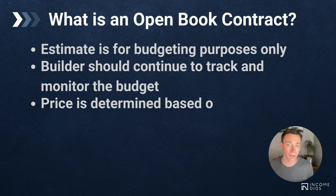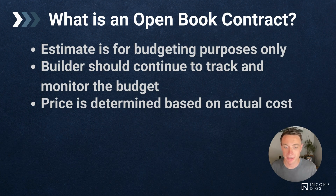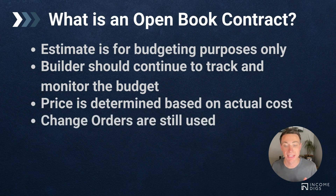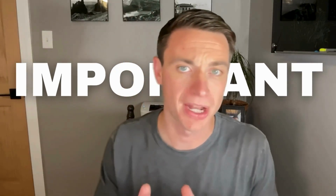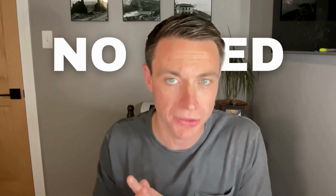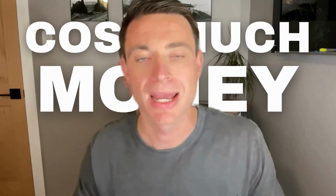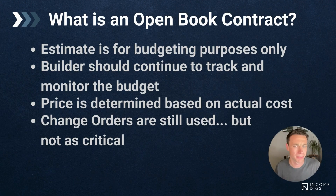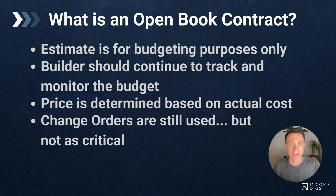Your price is determined by the actual costs you incur, and the builder should continue to track and monitor the budget throughout. Change orders can and should still be used, though they're not as critical. A lot of people think with an open book contract there's no need for change orders, but it's important to use them specifically when scope is changing — it helps with documentation, showing that everyone agreed to extra work and the associated cost. If you don't have those change orders in place, it's a harder conversation when unexpected costs arise.